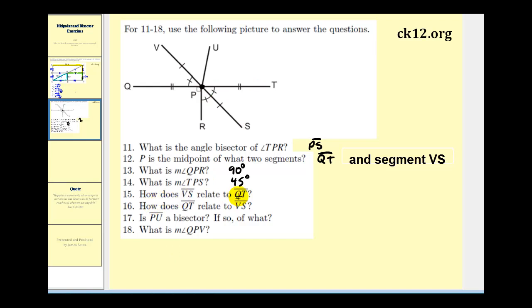Now let's take a look at number 15 and 16 together. Number 15 asks, how does segment VS relate to segment QT? So here's segment VS, and here's segment QT. Then the next question asks, how does QT relate to VS? Well they intersect at point P, and notice that point P is the midpoint for segment QT, and it's also the midpoint for segment VS. So the two segments are each other's bisectors. VS bisects QT, and QT bisects VS. Notice how I'm not saying perpendicular bisector because they don't form a right angle, but they do bisect each other.